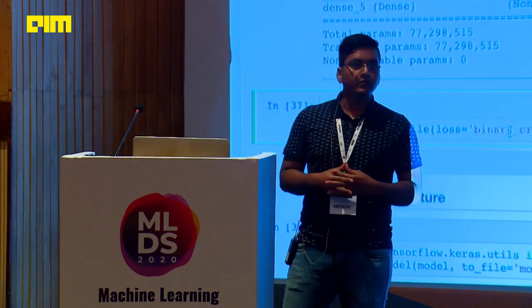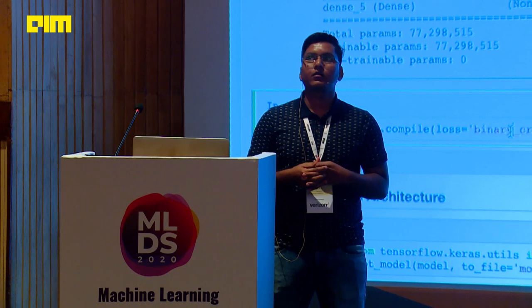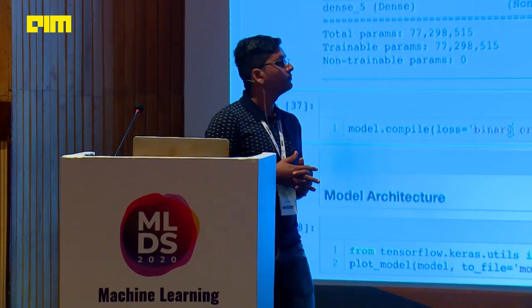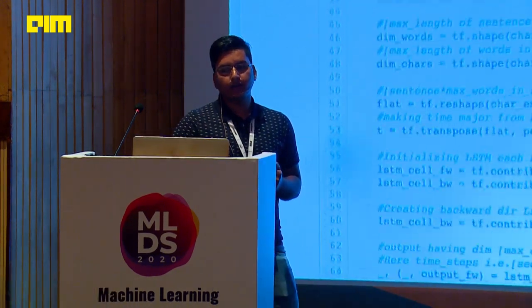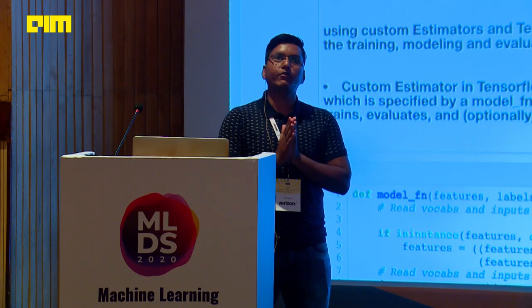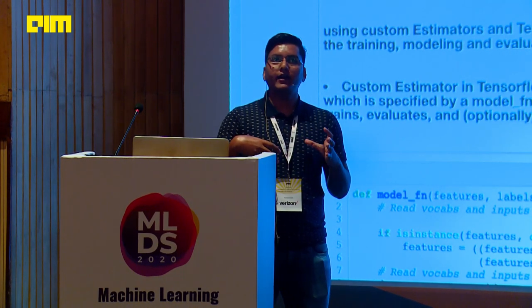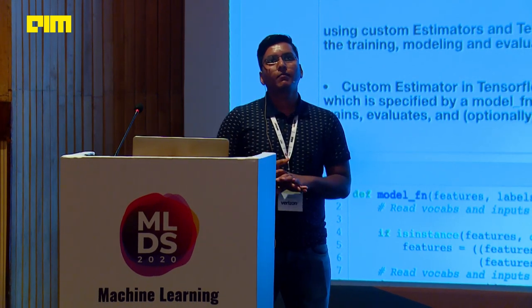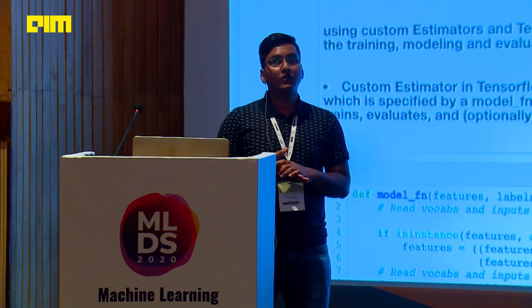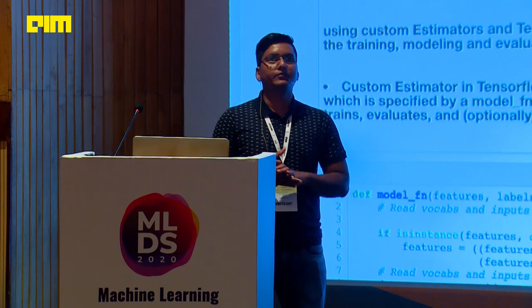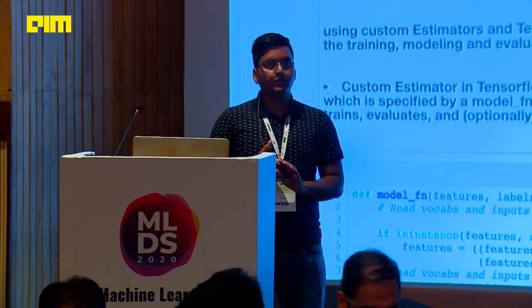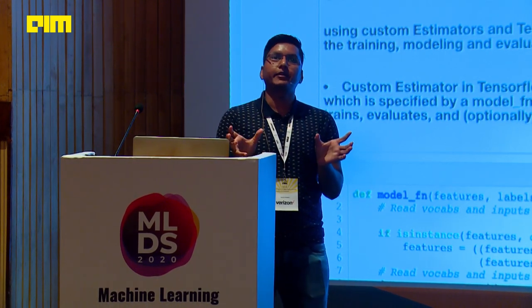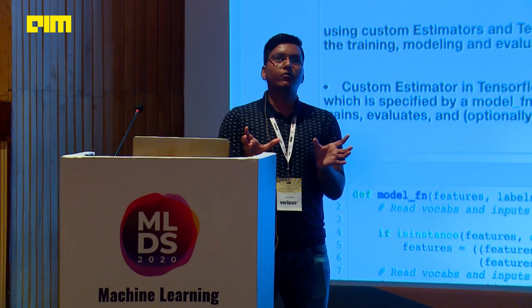Q&A: On character embeddings — we trained our own character embeddings rather than using pre-trained ones. For each character in a word, we generate an embedding, then train a BiLSTM layer to produce a word-level embedding from characters. We use character embeddings for every word, not just out-of-vocabulary ones. For out-of-vocabulary words, word embeddings default to zeros; character embeddings are generated for all words and then both are concatenated.